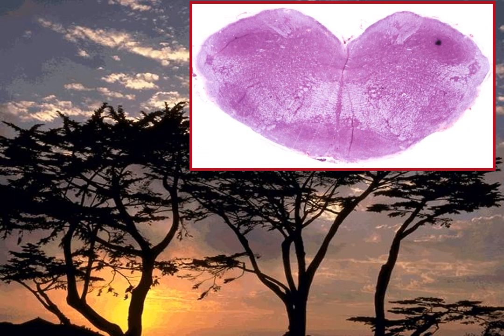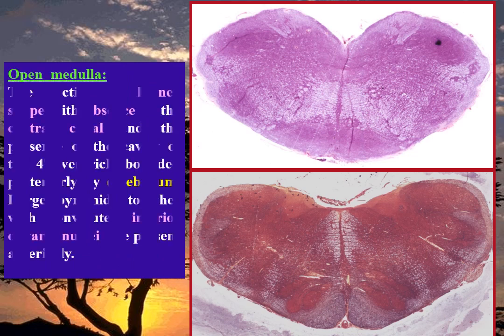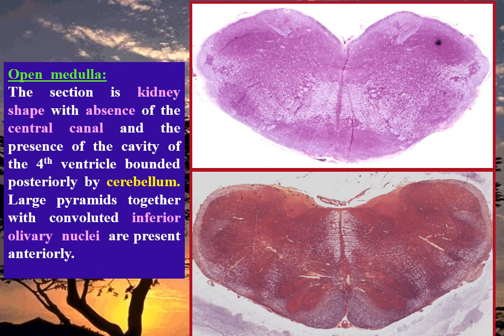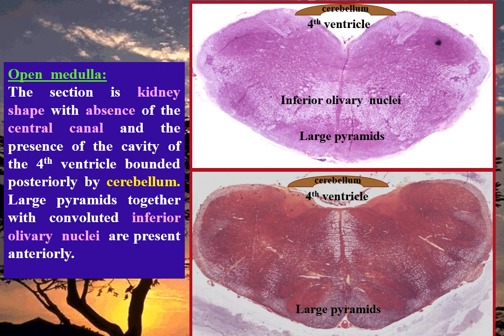Open medulla oblongata — the upper level of the medulla. The section is nearly kidney-shaped with absence of the central canal and the presence of the cavity of the fourth ventricle, bounded posteriorly by the cerebellum. The section sometimes contains part of the cerebellum. Large pyramids together with convoluted inferior olivary nuclei are present anteriorly.